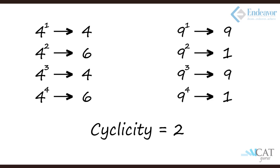Same thing happens for 9, it's 9, 1, 9, 1. So here 4 and 9, it happens in the alternates of 2.